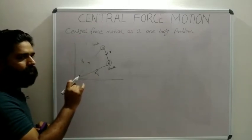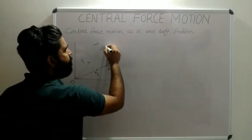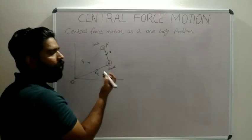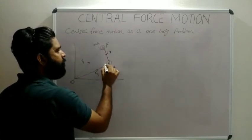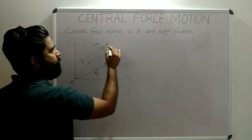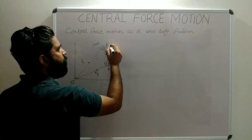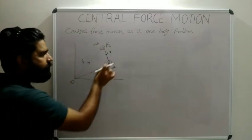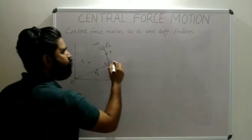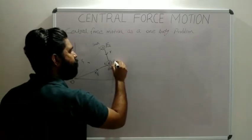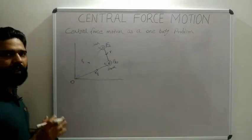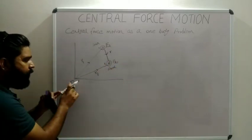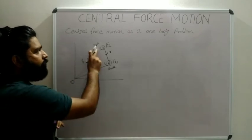If particle A (Sun) attracts Earth, the magnitude of that force is F12. Similarly, the Earth attracts the Sun towards the center of Earth, and that force is represented by F21.